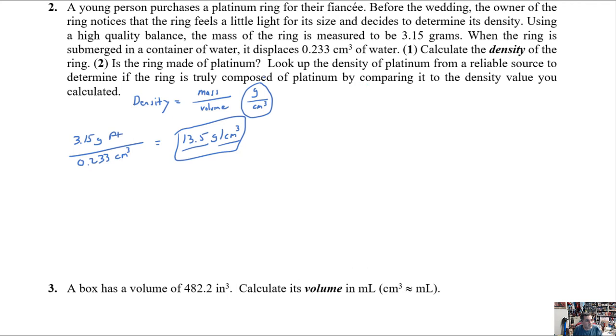And now it says, is the ring made of platinum? Look up the density. Well, I looked up the density from the National Institutes of Standards, which is a really reputable website. Make sure you're not just finding Billy Bob's website of craziness. I found that it's 21.5 grams per cubic centimeter as the density of platinum, the published value. These values obviously are not equivalent. So that means this dude or this lady got ripped off pretty hard because that is definitely not platinum.